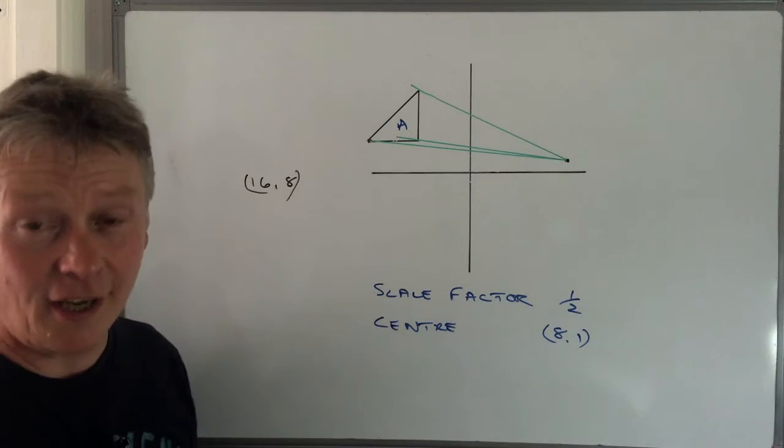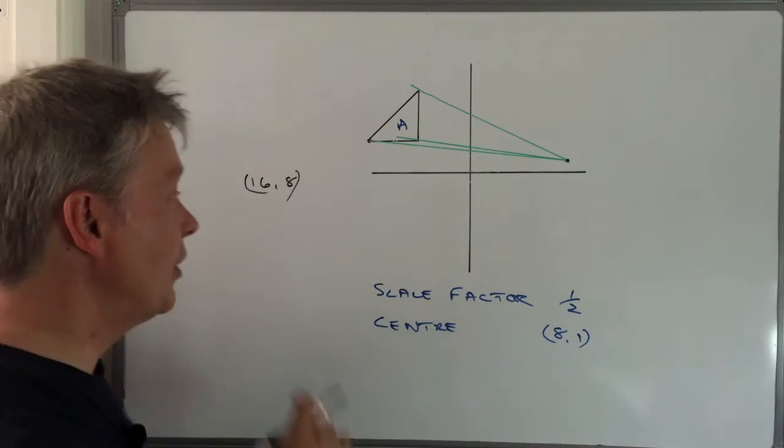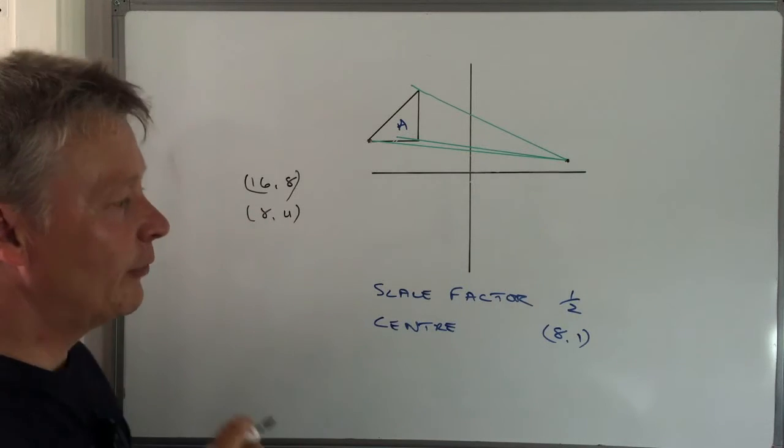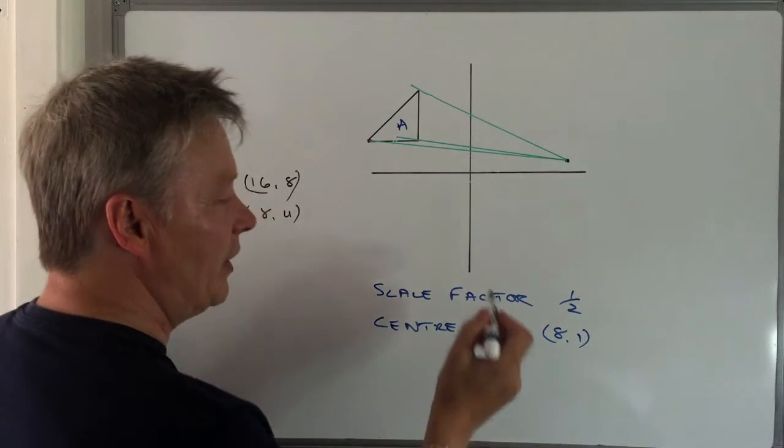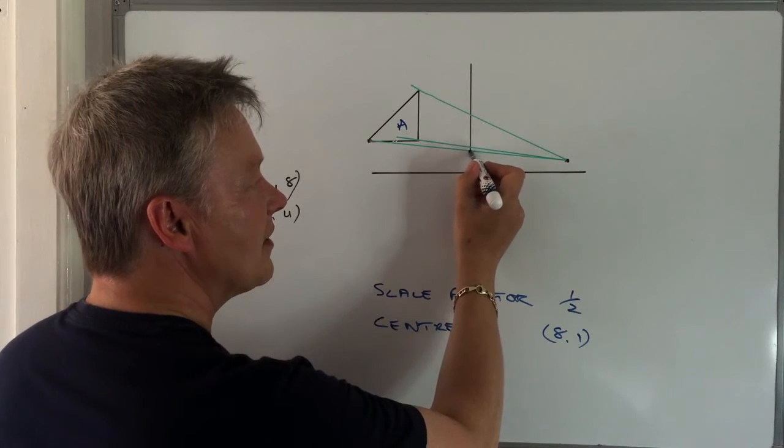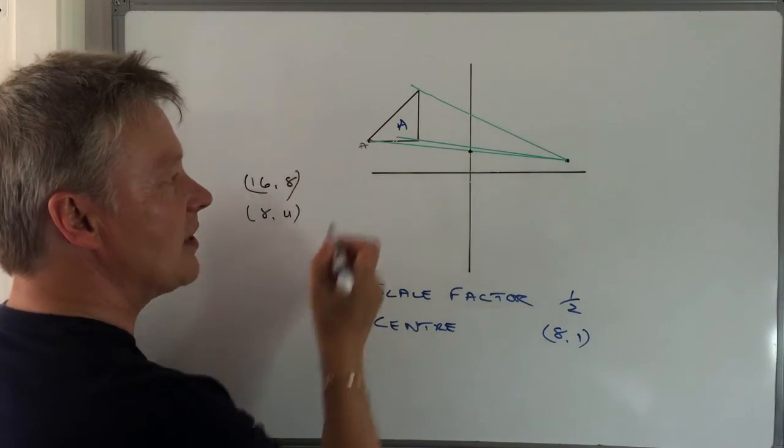Well, to enlarge by a scale factor of a half, we just simply half these numbers. So 8, 4. And if we plot that point, we know that 8, 4 is there. So this point here is A,